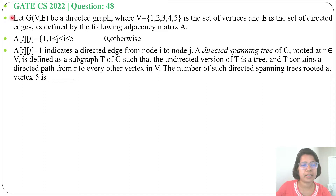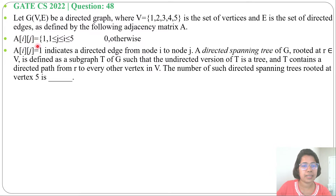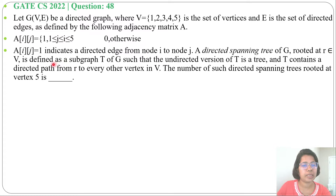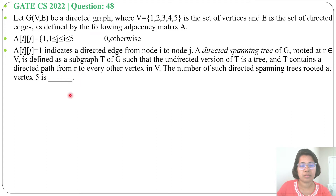Let's solve a previous question on greedy technique. This question was asked in GATE CS 2022, question 48. Let G be a directed graph where V = {1, 2, 3, 4, 5} is the set of vertices, and E is the set of directed edges defined by the adjacency matrix A, where A[i][j] = 1 if 1 ≤ j ≤ i ≤ 5, and 0 otherwise. A directed spanning tree of G rooted at r is a subgraph T such that the undirected version of T is a tree and T contains a directed path from r to every other vertex. The question asks how many such directed spanning trees are rooted at vertex 5.